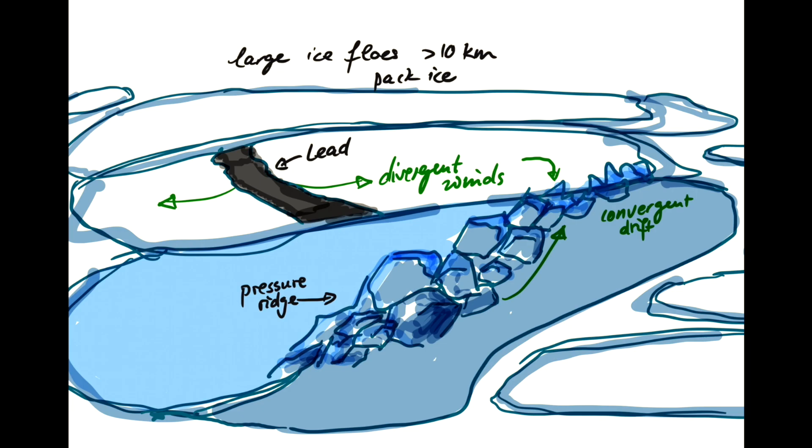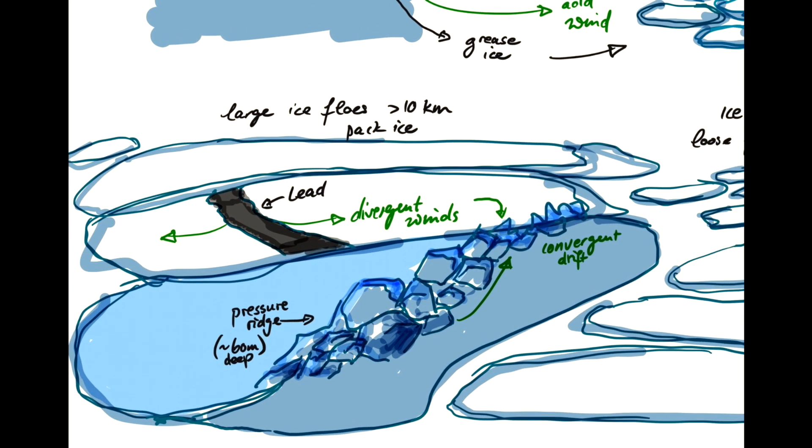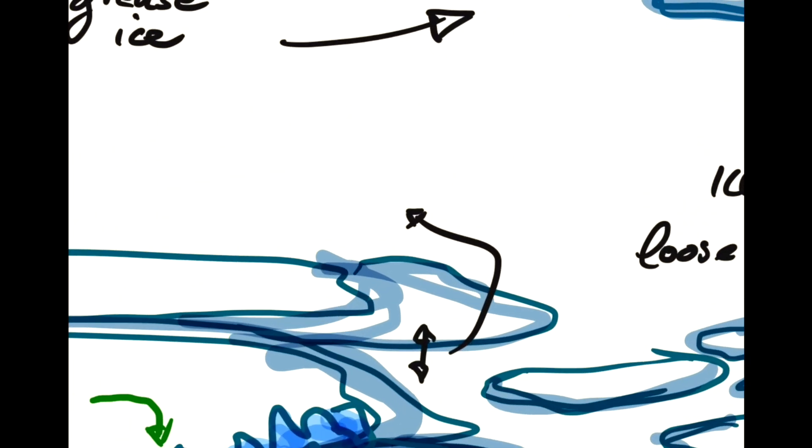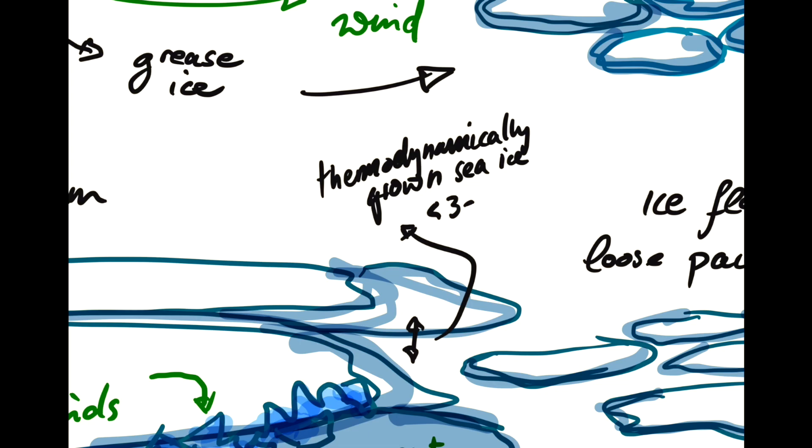And these can be up to 60 meters or so deep, whereas thermodynamically grown ice, the thickness of thermodynamically grown sea ice, is typically less than three meters.